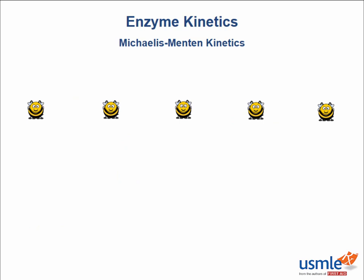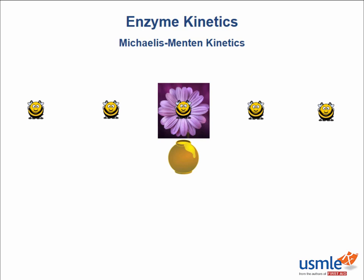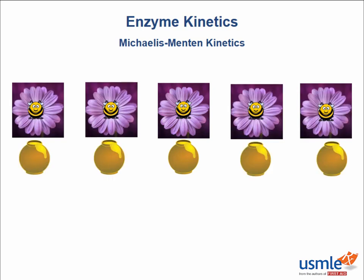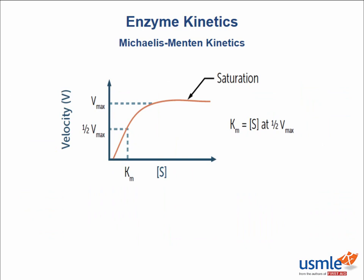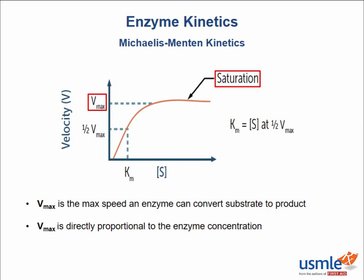Enzyme concentration is the second factor that affects the rate of a reaction. Imagine five bees and only one flower — one bee works and produces one pot of honey. With five flowers, all five bees work to make five pots. But with ten flowers, the five bees can still only make five pots — they're all occupied. We call this the enzyme saturation point, when all enzymes are working at Vmax. Vmax is the maximum speed at which an enzyme can convert substrate to product and is directly proportional to enzyme concentration.